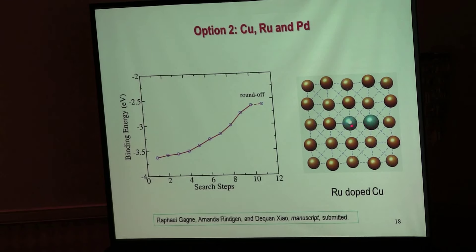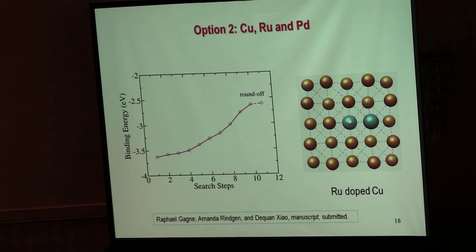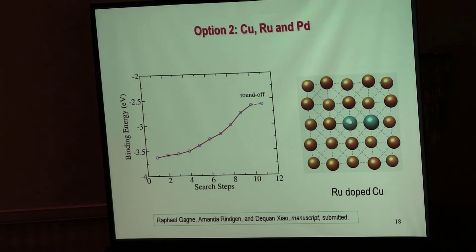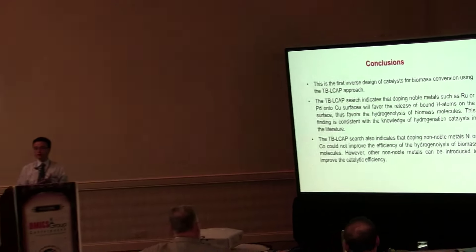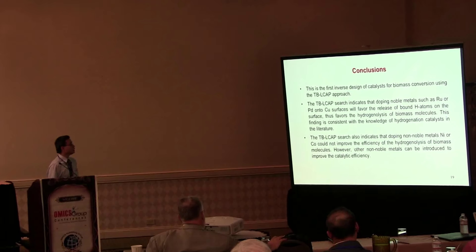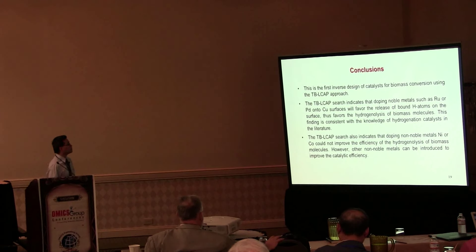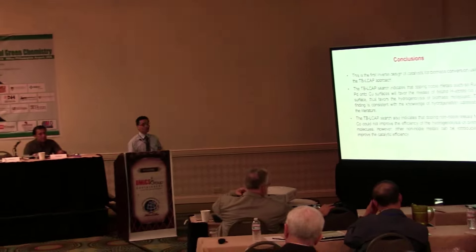Jumping to the results: I chose a copper framework and selected copper, ruthenium, and palladium as atom-type options for the four atoms surrounding the active hydrogen-binding site. Running the optimization to minimize the hydrogen binding energy — so that hydrogen can easily attack — we found the binding energy magnitude keeps getting smaller. This shows that doping ruthenium into copper yields a much improved catalyst. This is the first demonstration of inverse molecular design for biomass catalyst applications. Additionally, in my lab we have currently found that some non-noble metals can also improve catalytic capability.